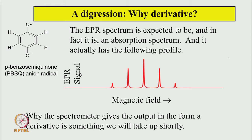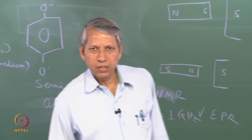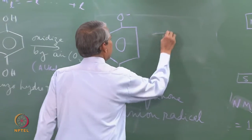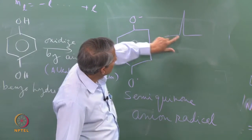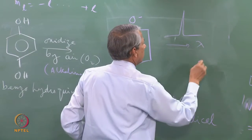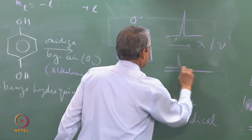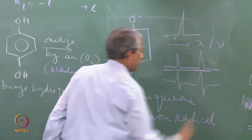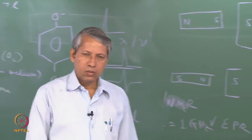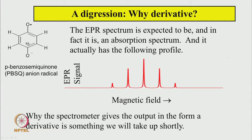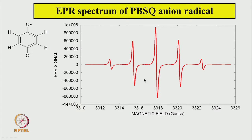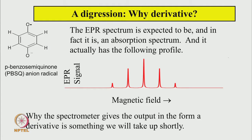Before the next example, a brief digression: the EPR spectra shown are recorded in the form of a derivative. In other types of spectroscopy, the absorption spectrum appears as a peak — intensity absorbed as a function of wavelength or frequency. Here, instead of a direct absorption spectrum, the spectrometer records the derivative of the absorption. The 5-line derivative spectrum is exactly equivalent to 5 absorption lines. Why the spectrometer gives the output as a derivative is something we will address shortly.